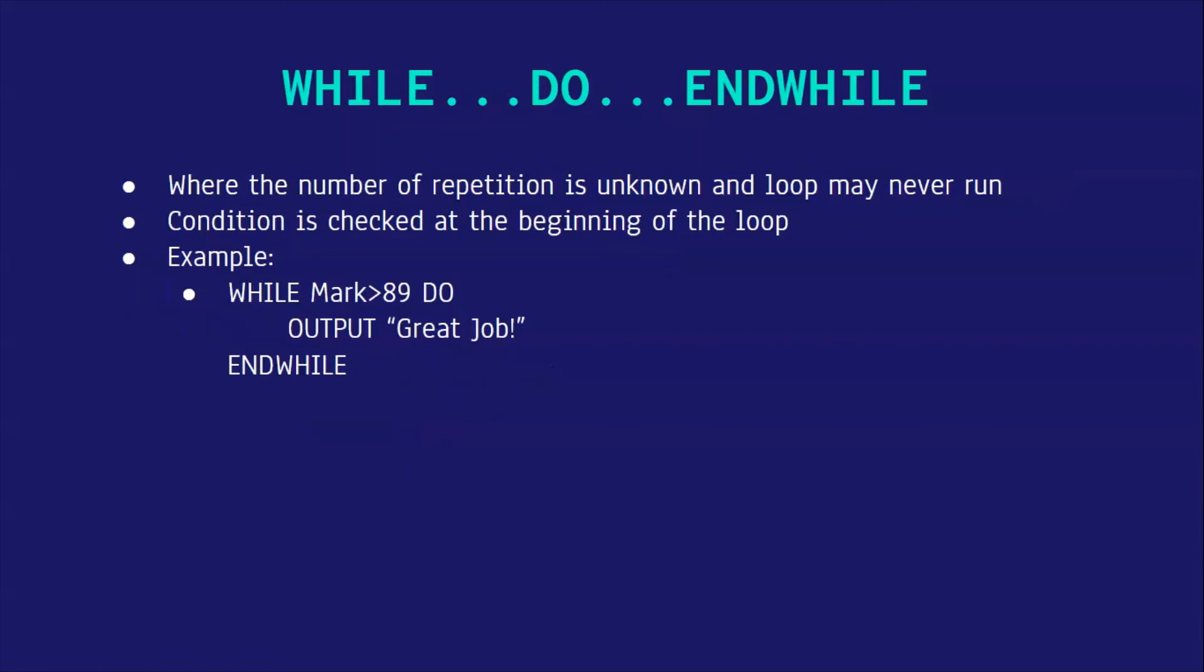Next, we have WHILE DO ENDWHILE loop. This is where the number of repetitions is unknown and the loop may never run. This is because the condition is checked at the beginning of the loop. For example, while mark is more than 89, do output great job and endwhile. This means that unless mark is above 89, this loop may never run.